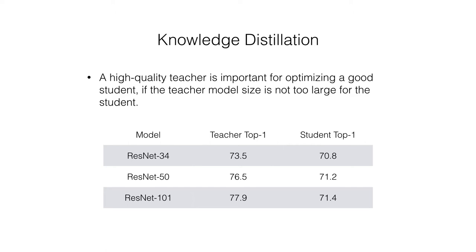A high-quality teacher is important for optimizing a good student. If the teacher is not well-optimized and provides noisy supervision, the risk that soft targets and ground truth conflict with each other becomes high. We evaluate the impact of teacher quality using ResNet-18 as the student model on the ImageNet dataset. From the figure, we can see that when the teacher size is not too large for the student, as the teacher's performance increases, it provides better supervision for the student by being a better predictor.